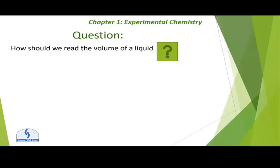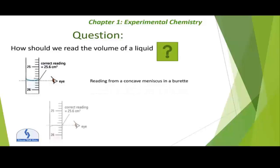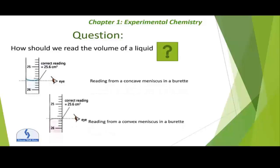The question arises: how should we read the volume of a liquid? If you are reading a concave meniscus in a burette, you keep the eye level at the bottom of the meniscus. If you are reading a convex meniscus in a burette, you read from the top of the meniscus, as shown in the figure.